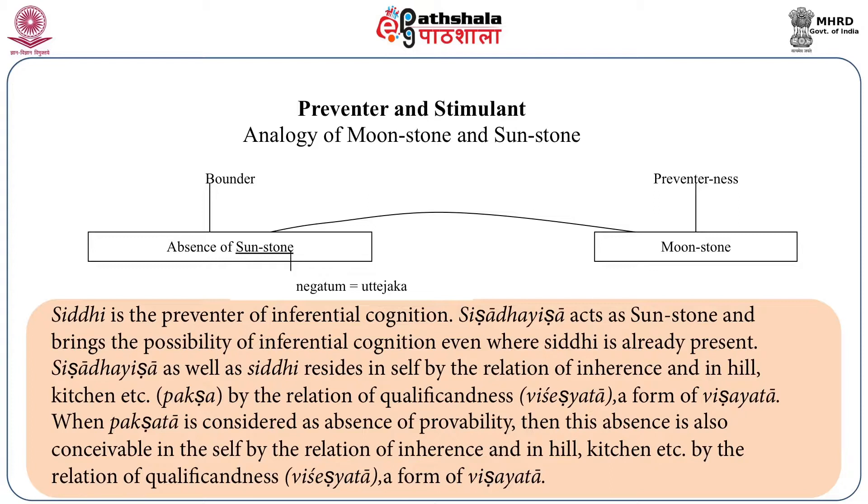To sum up: two cognitions are required to produce inferential cognition — Vyaptic Gyan and Paksha Dharmata Gyan, which is the presence of Hetu in Paksha. Vyapti must be remembered, Paramarsha takes place, and we must understand what locus — Paksha — allows inference. Pakshata specifies the certain places where inference can be made. If you wish to understand more, please turn to the Learn More section and consult the e-text available there. Thank you.